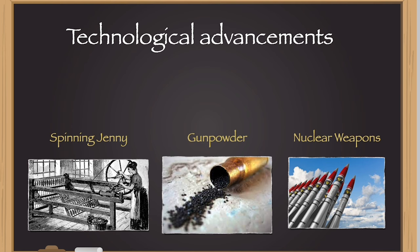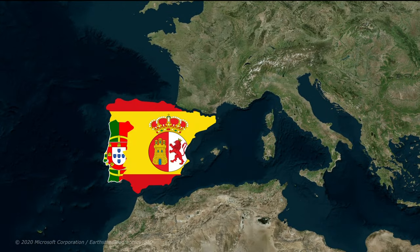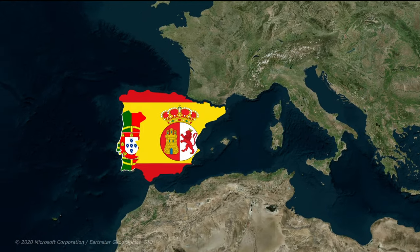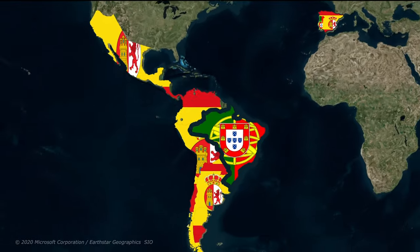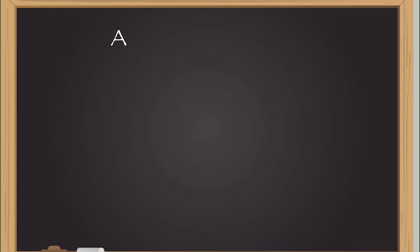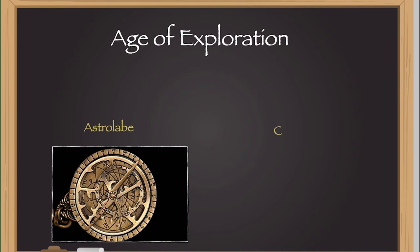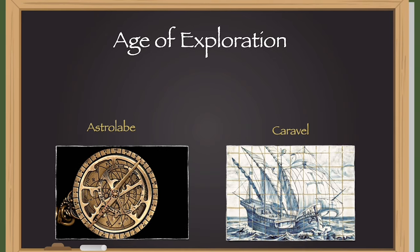One of the most significant examples is the age of exploration, driven by advancements in navigation and shipbuilding. This era saw European powers like Spain and Portugal explore and colonize vast territories across the Americas, Africa and Asia. The development of the astrolabe and the caravel allowed navigators to sail further with greater accuracy and safety, fundamentally changing the geopolitical map of the world by facilitating the rise of colonial empires and the spread of European influence.